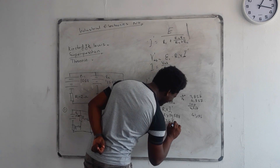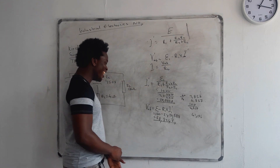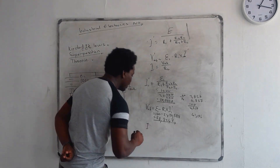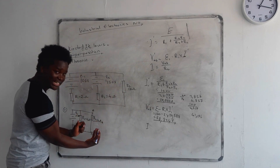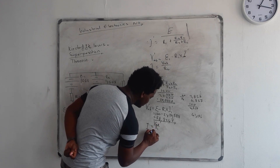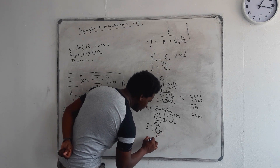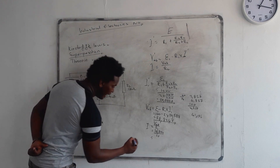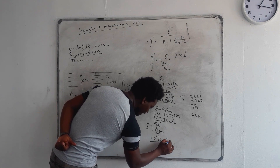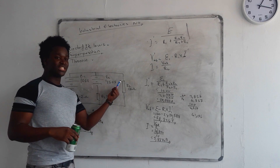Now let's calculate the actual current flowing through the load resistor. It's going to be VAB divided by RL, which is 58.824 divided by 10 — because 10 is our RL. The answer is 5.8824 amps. That is our answer for the current supplied by the first battery. Now let's do the second power source.